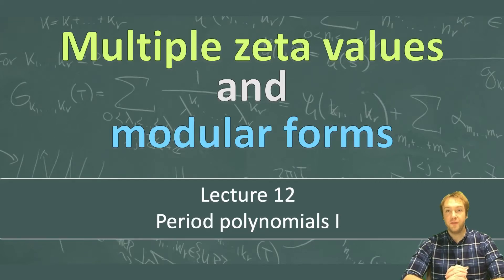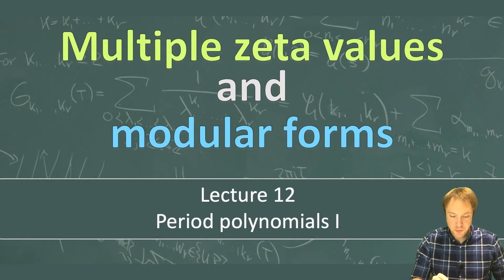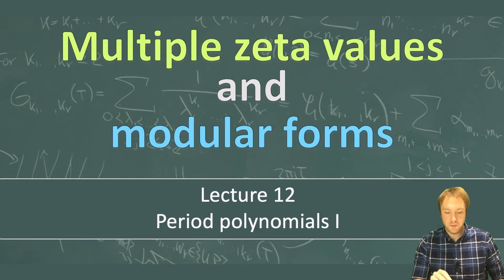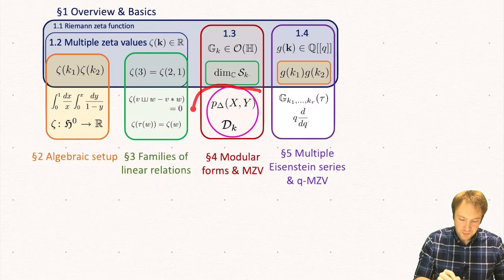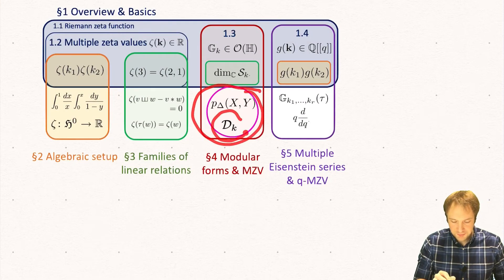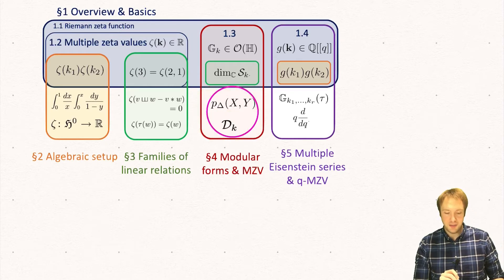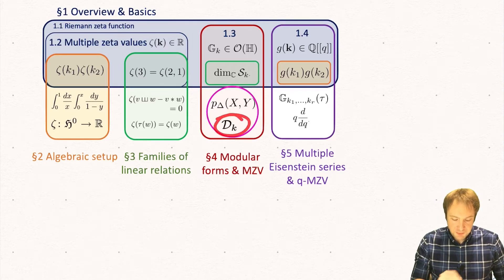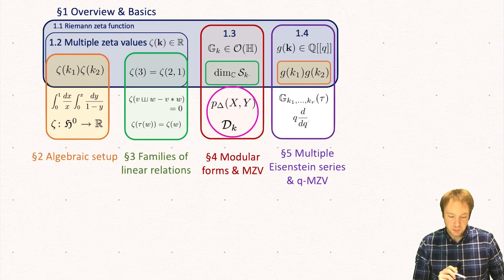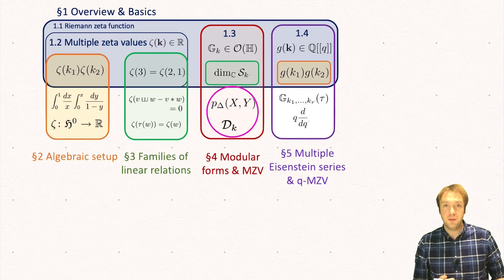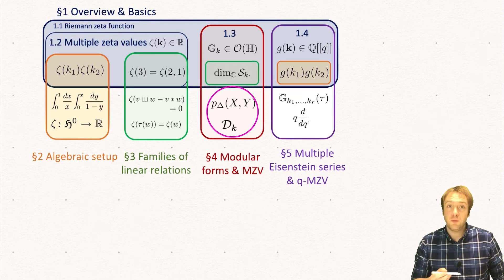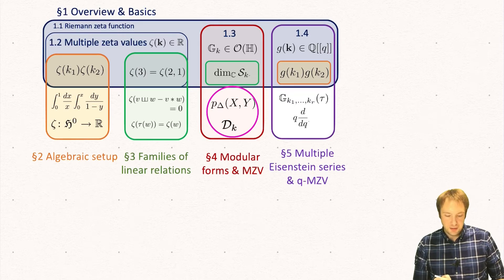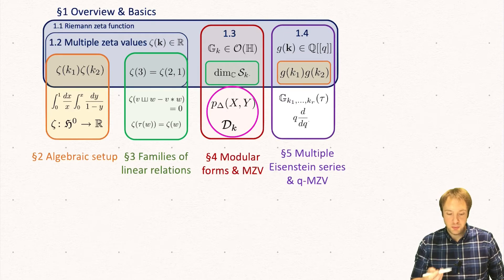Welcome to lecture number 12 of Multiple Zeta Values and Modular Forms. Today and next time we want to talk about period polynomials of modular forms and the connection of these polynomials to our formal double zeta space. We want to understand the relationship between our formal double zeta space and these polynomials, which we will define today. We will see that there will be a subspace of this formal double zeta space which will be isomorphic to the space of modular forms, and the isomorphism will be given by these combinatorial Eisenstein realizations which we introduced last time.